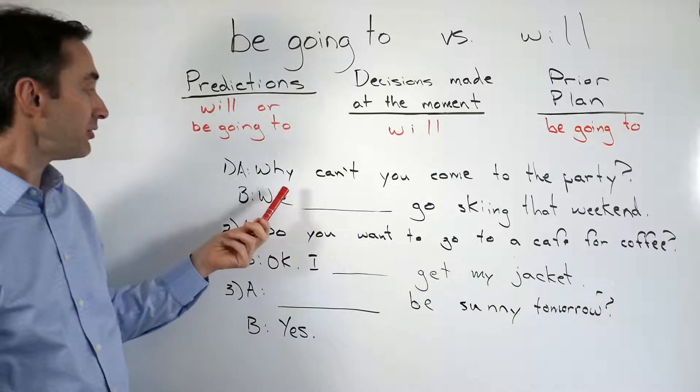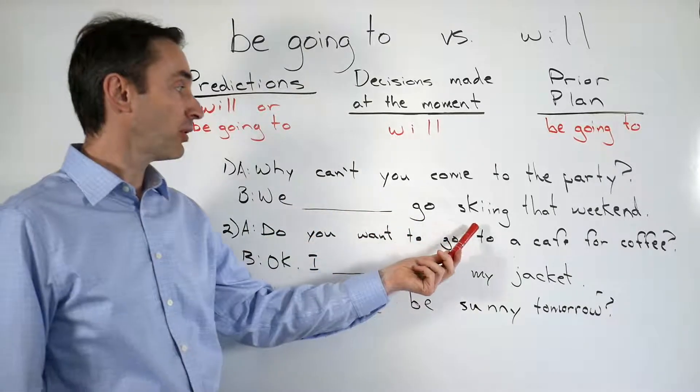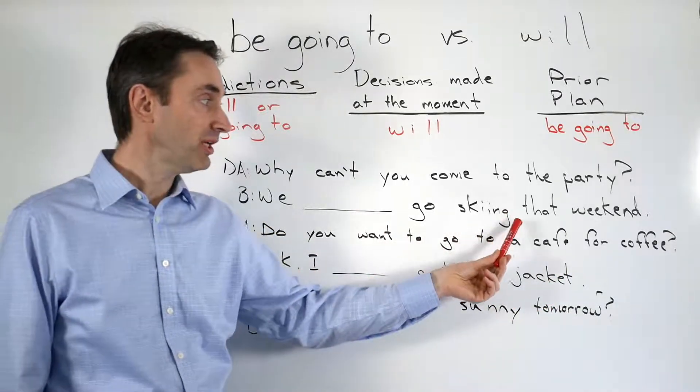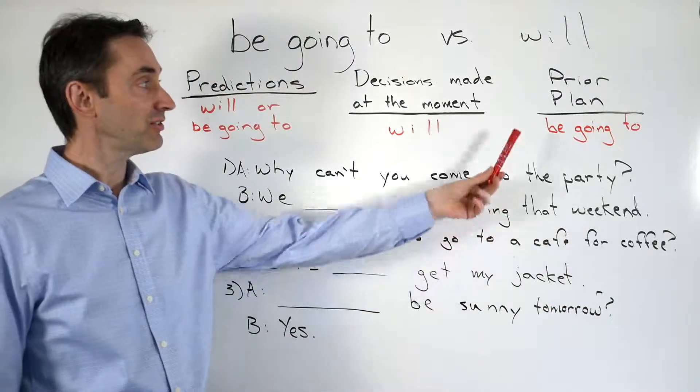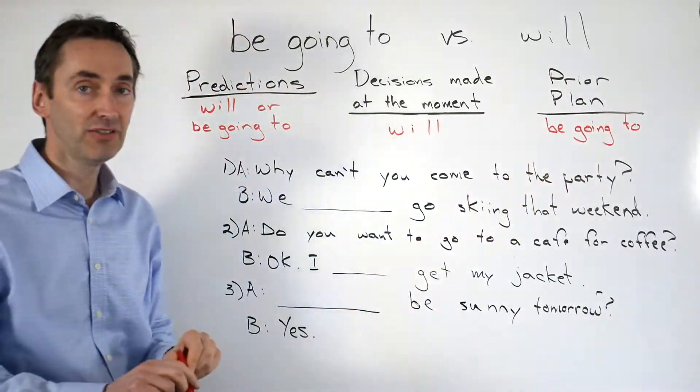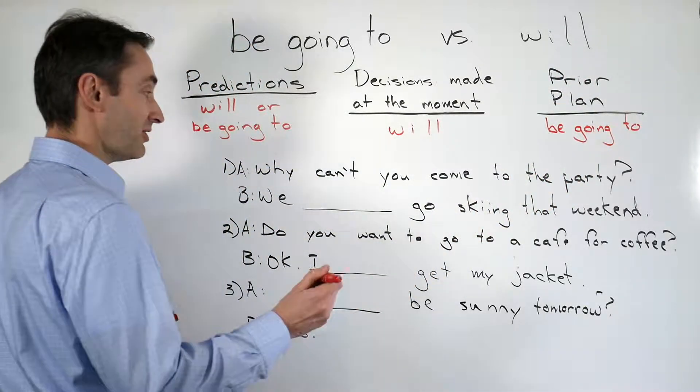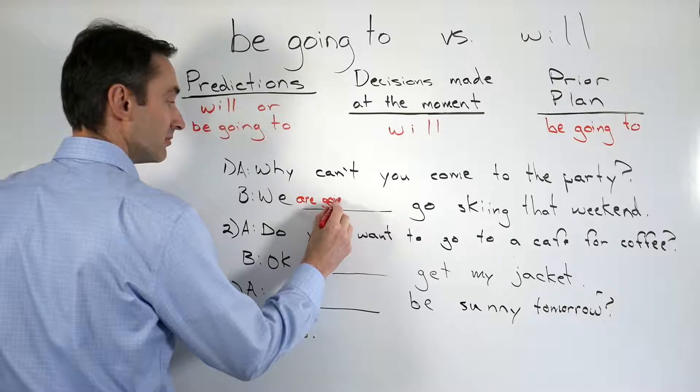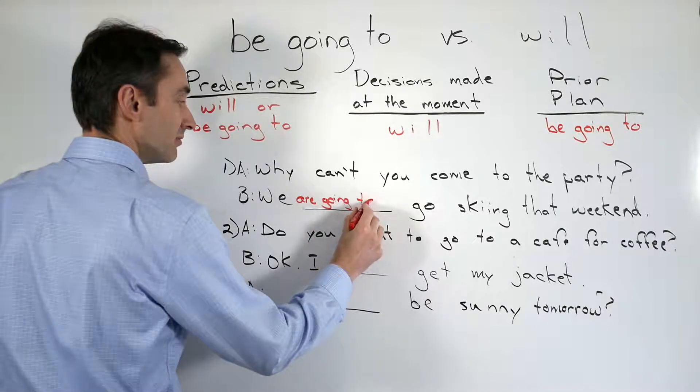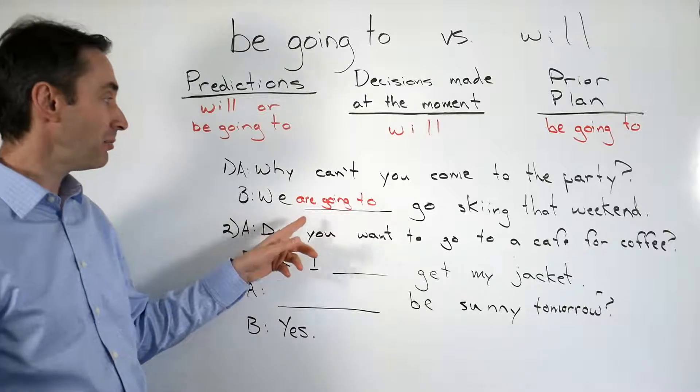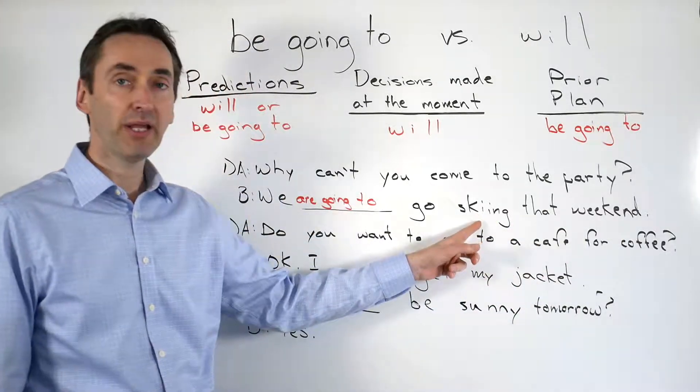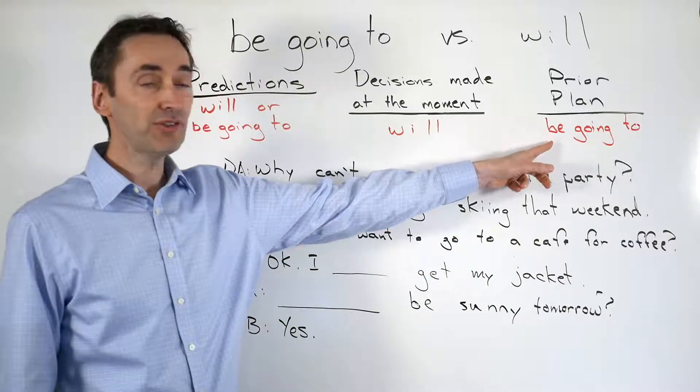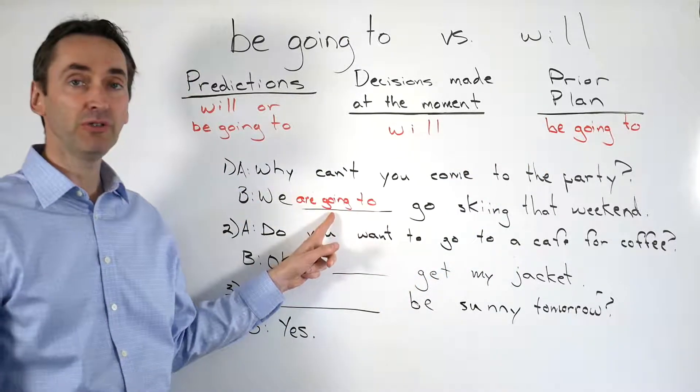Looking at the first one, the people are going skiing that weekend. This is in the future. They have a plan to go skiing in the future. This is a prior plan in this case. So we would use be going to in this situation. We understand that because we can see that this is in the future and they are planning to go skiing then. So we know that this is a prior plan. Since it's a prior plan, we can only use be going to in the first one.